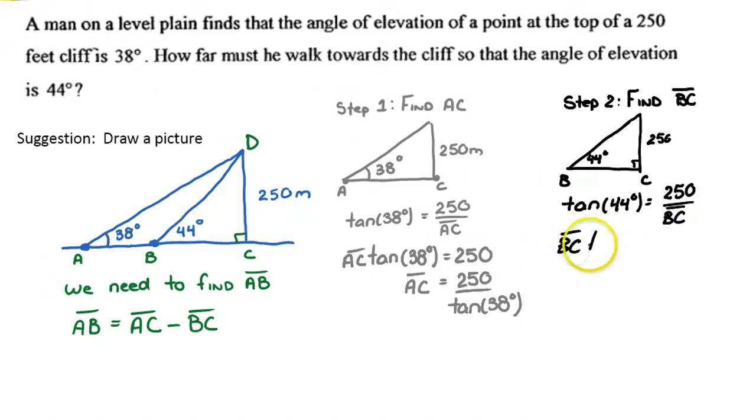So BC, again, we'll do all the algebra here, tan of 44 degrees. So BC equals 250 over tan 44 degrees.